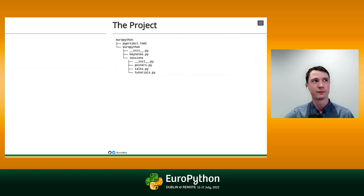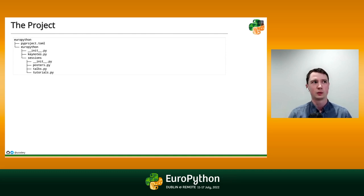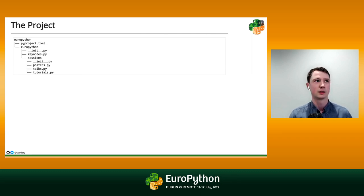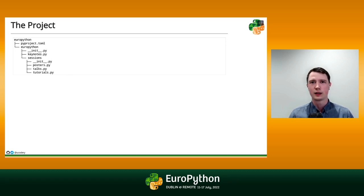We're not going to look at it any further — we're going to turn it into a project by stepping up one level in the directory tree. We've moved out of the EuroPython directory, which is part of the package — that would be the root module you import — and we've stepped into the EuroPython folder that is the project. So it contains a package, but it also contains the metadata. All that metadata is going to be contained in one file today: pyproject.toml.